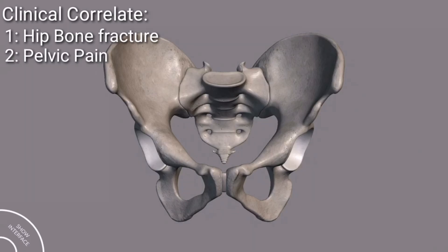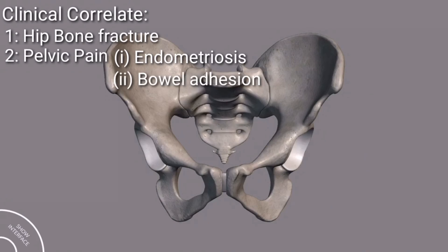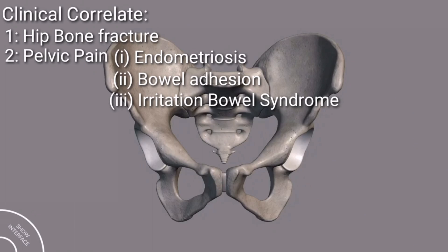The second clinical correlation is pelvic pain, which can affect anybody and has a variety of causes. For example, it can occur in endometriosis in women, due to bowel adhesion, irritable bowel syndrome, and also interstitial cystitis. In these conditions you will see pelvic pain.